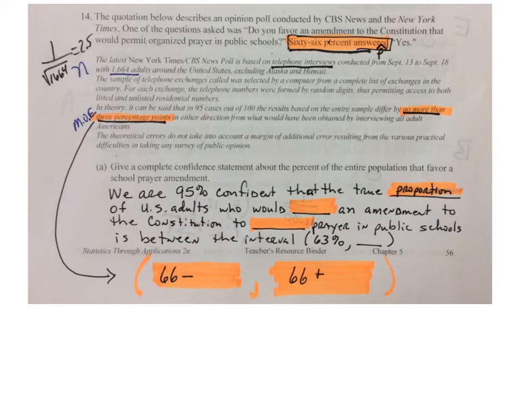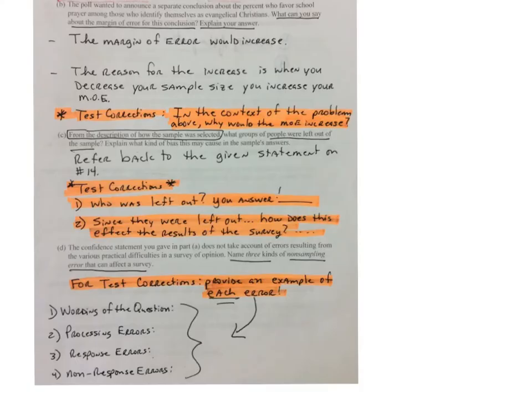We are ninety-five percent confident that the true proportion of US adults who would [blank] an amendment to the Constitution to [blank] prayer in public schools is between the interval of sixty-three percent and you fill in the blank.